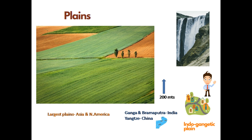The third landform is plains. Plains are flatlands — many are even and some are rocky — and their highest elevation extends up to 200 meters from sea level. Rivers originate from mountains, erode the mountain soil, and deposit their carried material along the way. The largest plains are thus formed with these deposits. The world's largest plains are seen in Asia and North America.